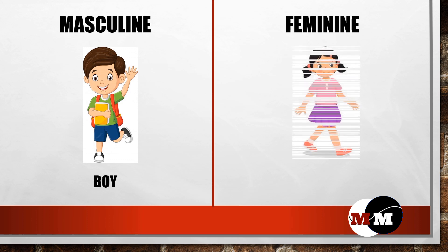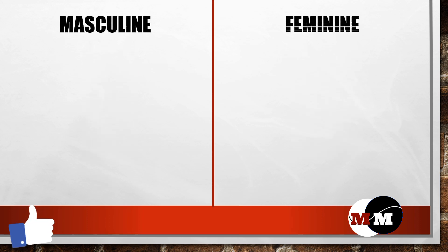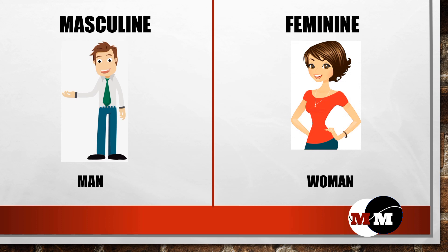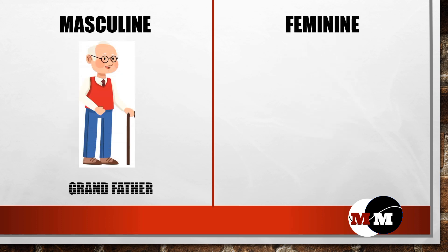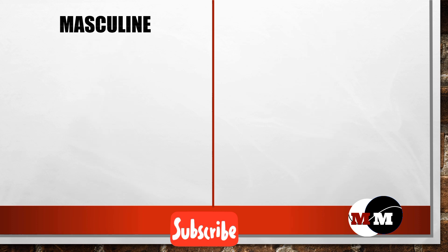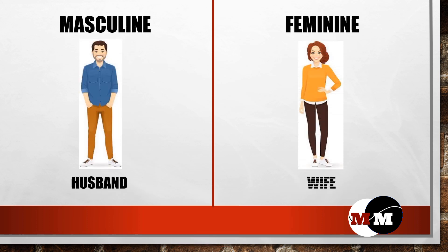Examples. Male is boy and female is girl. Man. Woman. Grandfather. Grandmother. Husband. Wife.